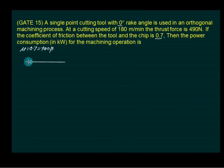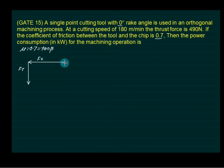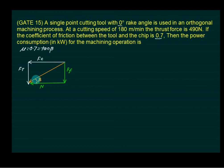Since gamma equals 0, we use the standard diagram where Fc is horizontal and Ft is vertical. The friction force is therefore vertical and the normal force is horizontal. The resultant force is R, and the angle beta equals tan inverse of 0.7. The alternate angle is the same, so beta equals beta.